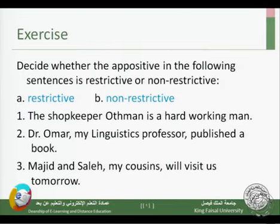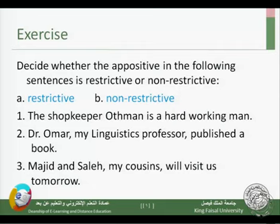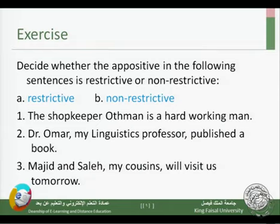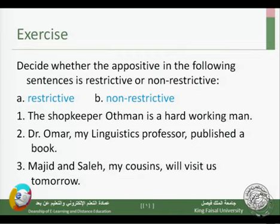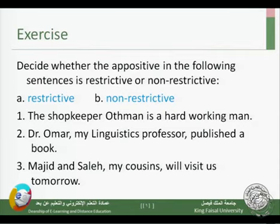Let's look at this exercise: decide whether the appositive in the following sentences is restrictive or non-restrictive. Number one: 'The shopkeeper Uthman is a hard-working man.' We have two noun phrases — 'the shopkeeper' and 'Uthman.' Uthman limits the meaning of the first NP; when we say 'the shopkeeper,' you might ask which shopkeeper, but 'Uthman' restricts that meaning. So Uthman is a restrictive appositive.